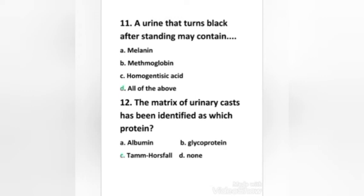Next question: the matrix of urinary cast has been identified as which protein? Albumin, glycoprotein, Tamm-Horsfall protein, or none. Right answer is option C, Tamm-Horsfall protein.